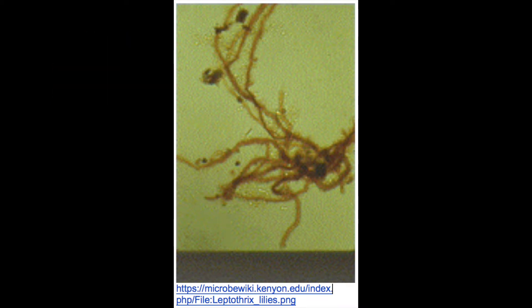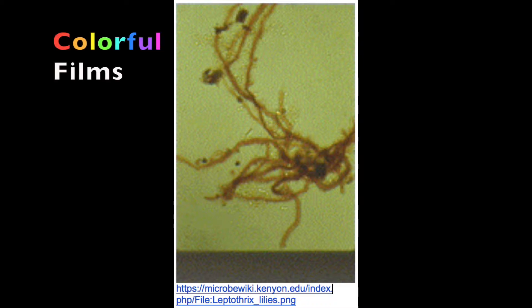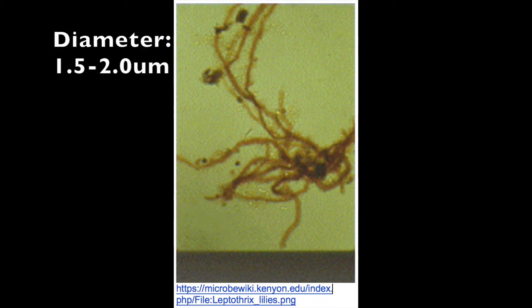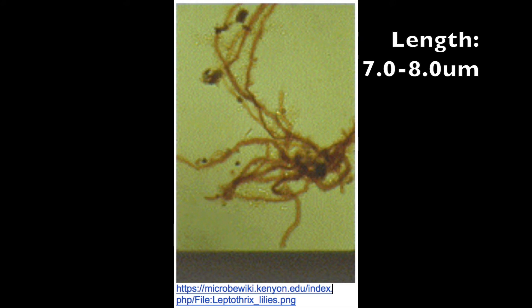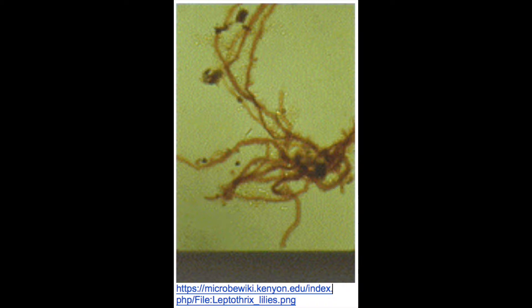We'll talk about sheaths a little later. L. dyscophora is often seen by us in colorful films, which we will also discuss later. Its diameter ranges from 1.5 to 2 micrometers, and its length from about 7 to 8 micrometers, depending on what type of medium it is in. It commonly forms long chains.